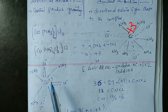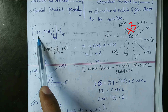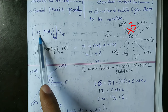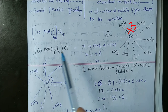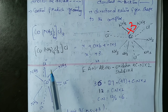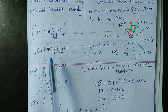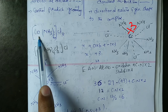Primary valency is the oxidation state of the metal atom, and secondary valency is the coordination number of the metal atom.